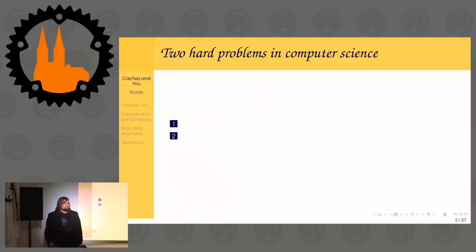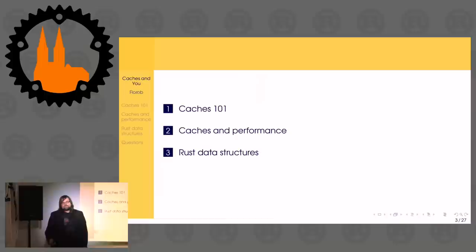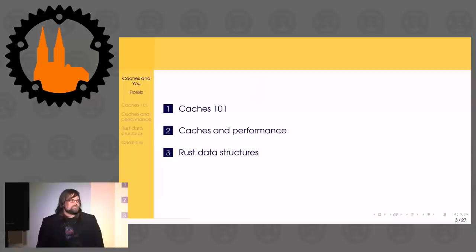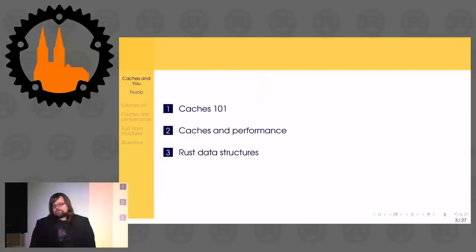To lead with: everybody knows there are two hard problems in computer science, right? The first one is naming things, the second one is cache invalidation, and the third one is off-by-one errors, obviously. What I actually want to talk about today is three sections. First, a quick caches 101 — what is a CPU cache, what does it do, why is it there. Then caches and performance, and we'll look at some standard Rust data structures.